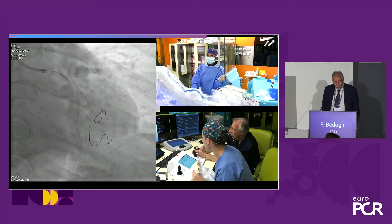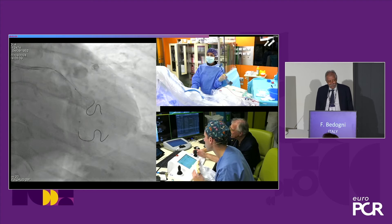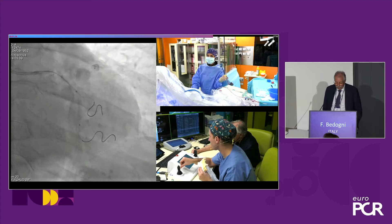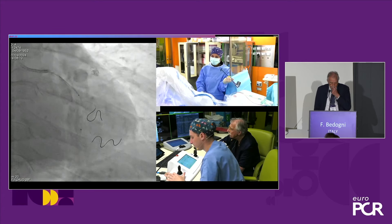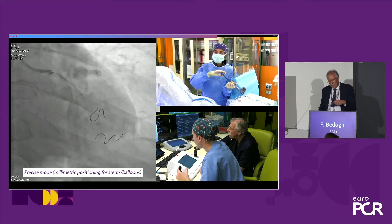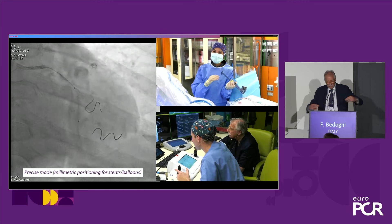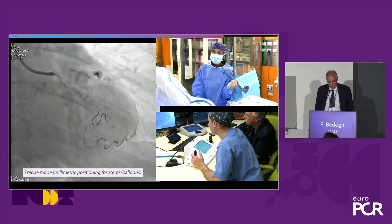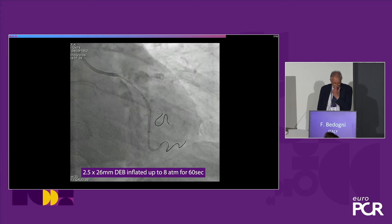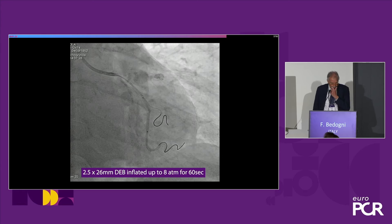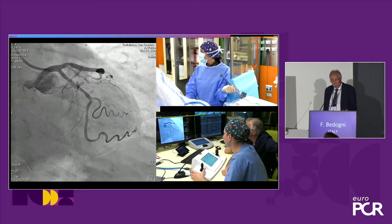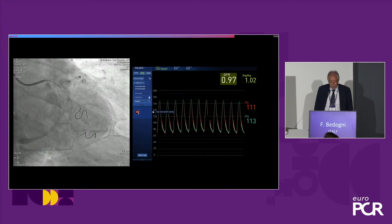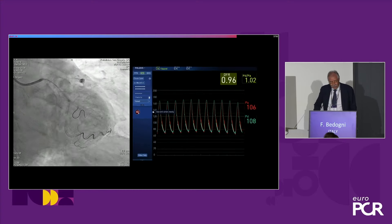We then delivered the drug-eluting balloon. It's the only one operator in the cath lab — Alice behind the screen. We inflated the drug-eluting balloon. The only thing needed inside is to inflate the balloon during the procedure. The result after inflation of the 2.5×26 drug-eluting balloon looks good. We have the FFR wire in place, so we can measure the result. The FFR is absolutely good — the result is 0.97.